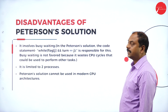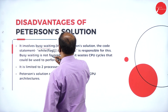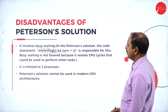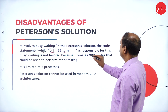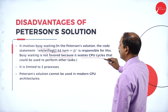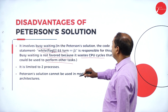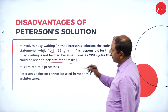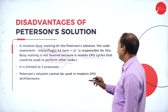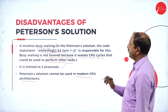Now let us see the drawbacks of Peterson's solution. First, it involves busy waiting — a loop is used which wastes CPU cycles that could be used to perform other tasks. Second, it is limited to two processes simultaneously. Third, it cannot be used in modern CPU architecture. These are the three drawbacks of Peterson's solution.